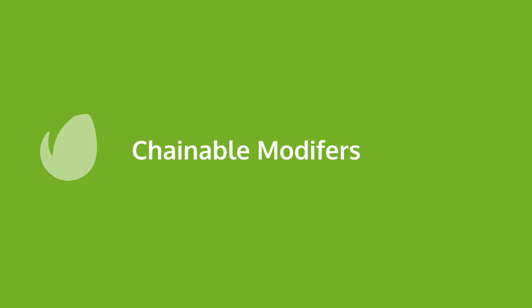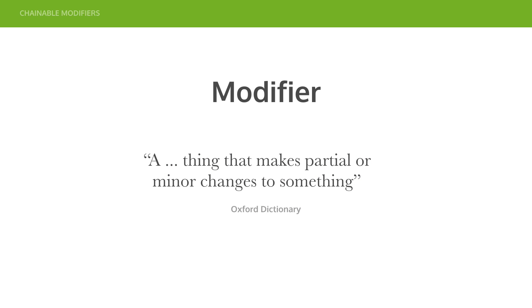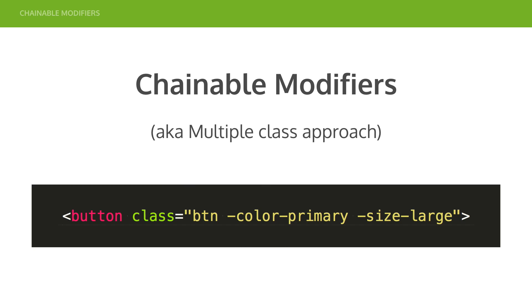Then we've got modifiers. Variations are for when you want to do something completely different. If you want to make a slight tweak — say make the size large, or make the color green — you're really modifying it. A modifier, according to the Oxford Dictionary, is a thing that makes a partial or minor change to something. The logic is kept in the HTML so you can configure modules in your HTML — you don't need to know what the CSS is doing, you just trust that smart developers have built it well. The source ordering shouldn't matter.